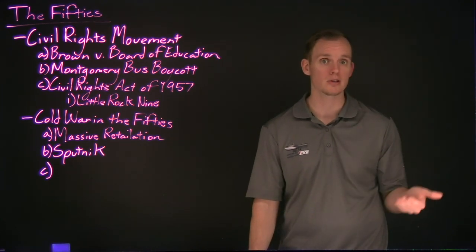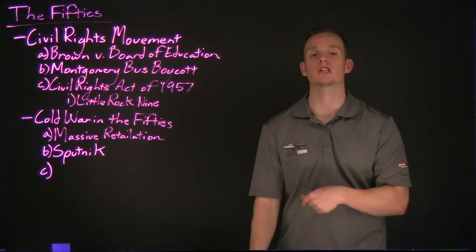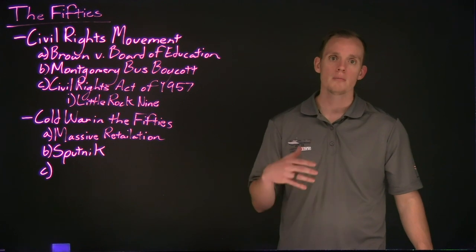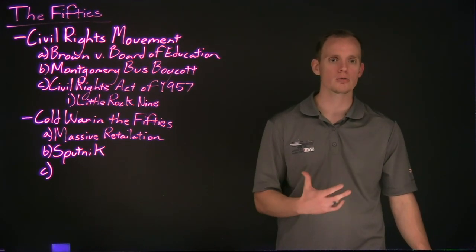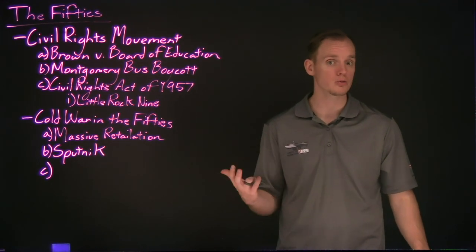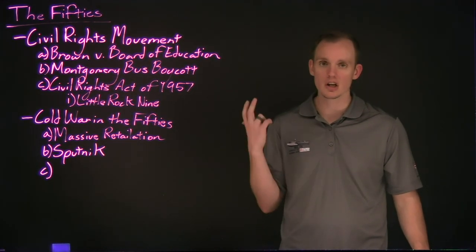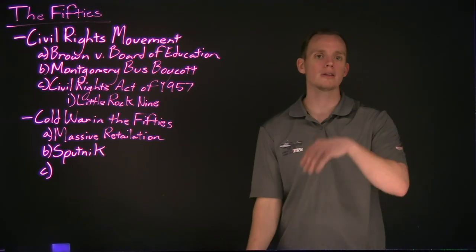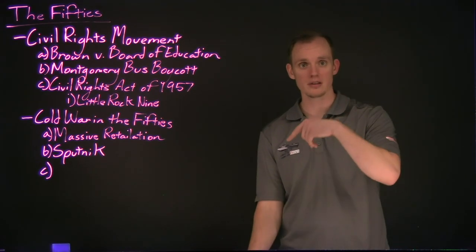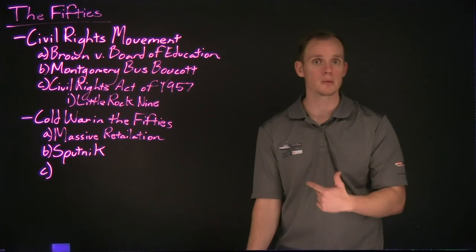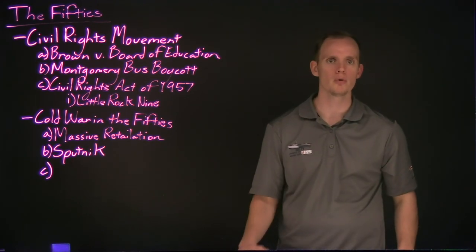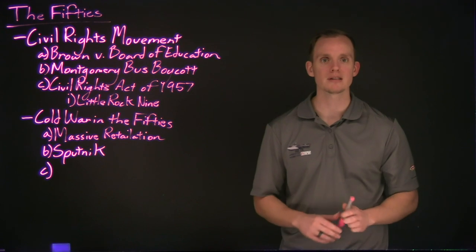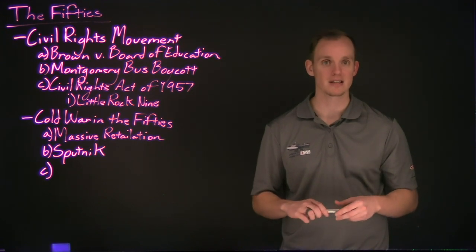The U.S. will catch up to the Soviets and launch a satellite into orbit by the end of the 1950s, but this will effectively begin the space race, as both countries — already engaging in an arms race — are now going to engage to see who can be the next country to send a man into space, and then the next country to land a man on the moon. But those issues will come to fruition by the time we get to the 1960s.